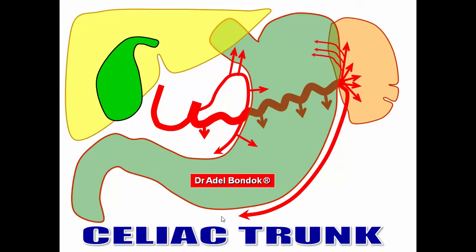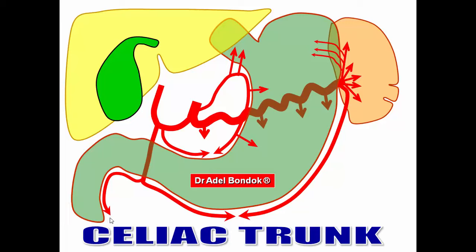The splenic artery also gives the left gastro-epiploic artery along the greater curvature of the stomach. The hepatic artery gives the right gastric artery, which anastomoses with the left gastric along the lesser curvature. It gives the gastro-duodenal artery, which runs behind the first part of the duodenum and divides into two branches: the right gastro-epiploic artery (anastomosing with the left) and the superior pancreatic-duodenal artery, which supplies the upper half of the duodenum and anastomoses with the inferior pancreatic-duodenal artery at the major duodenal papilla. The right branch of the hepatic artery gives the cystic artery to the gallbladder.